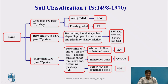The same classification system applies for sand. We classify sand further based on the fine material content: whether it is less than 5%, 5 to 12%, or more than 12%. The same approach used for gravel is followed here, with the only change being that instead of G, we use S everywhere as the symbol.